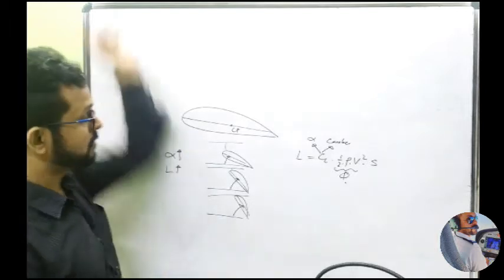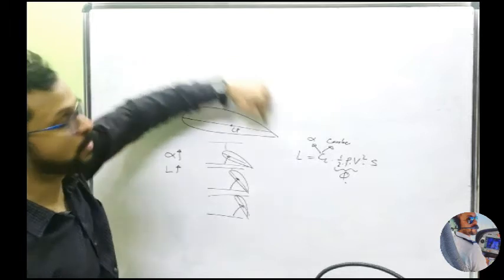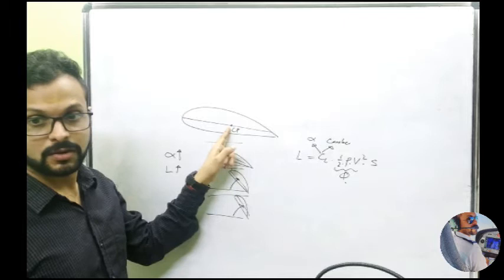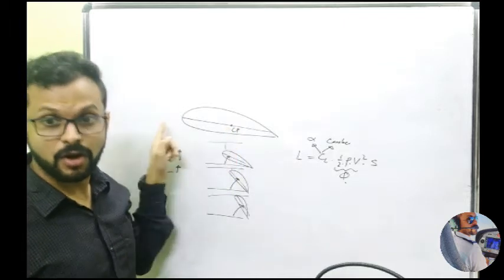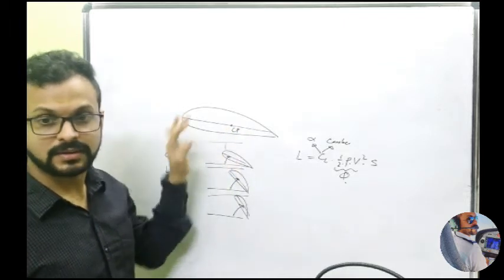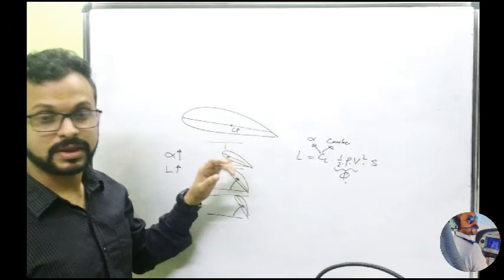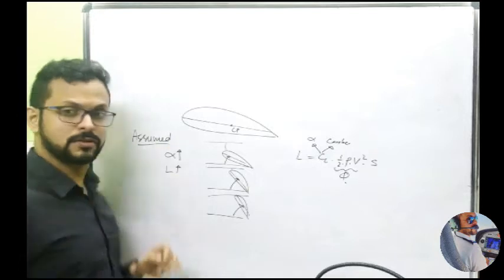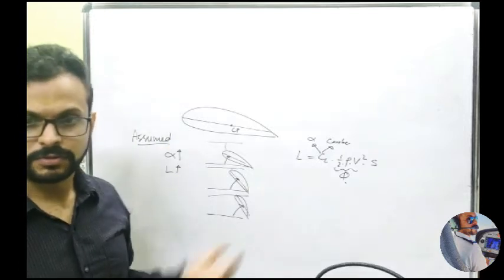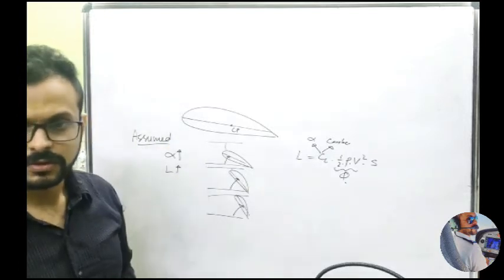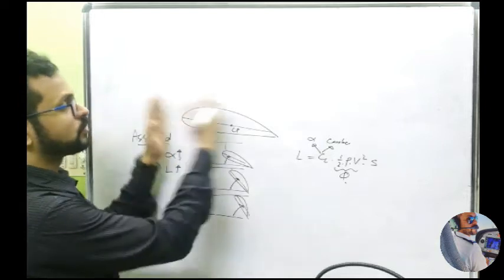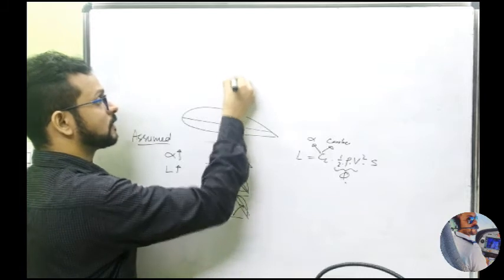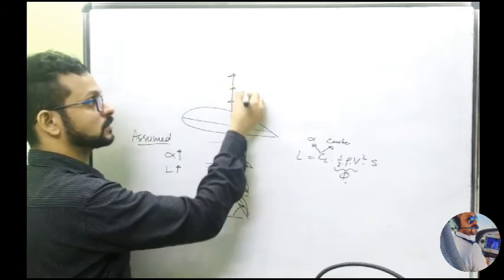Where is the lift acting from? Remember, lift is acting from every single point on the wing, but we consider a point CP — which is called the center of pressure — along the chord line, from where the entire lift of the wing is assumed to act. Just like your center of gravity is for weight, the center of pressure is for lift. So the lift is produced everywhere, but we concentrate it at CP.